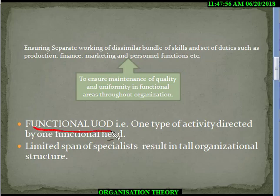Functional unity of direction means one particular function — like those who are under sales and marketing — will have the same aim. Unity of direction means one goal; all efforts go in the same direction.